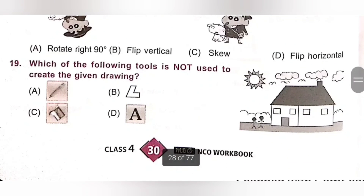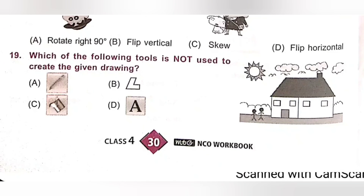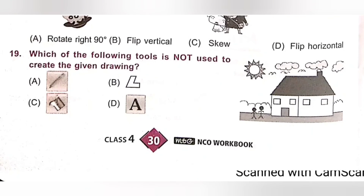Question 19: Which of the following tool is not used to create the given drawing? A. Pencil, B. Shape, C. Color, D. Text. For the given drawing, we did not use any text. So the Text tool is not used to create the given drawing. Option D is the correct answer.